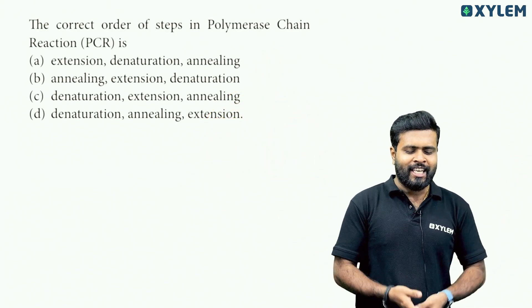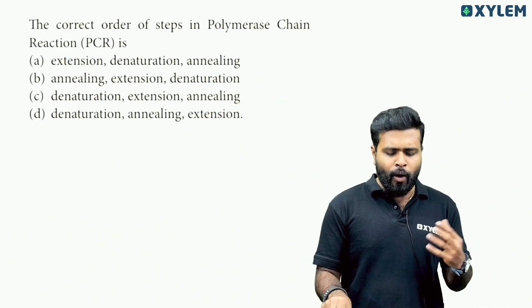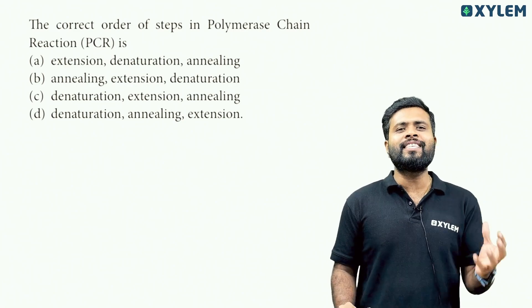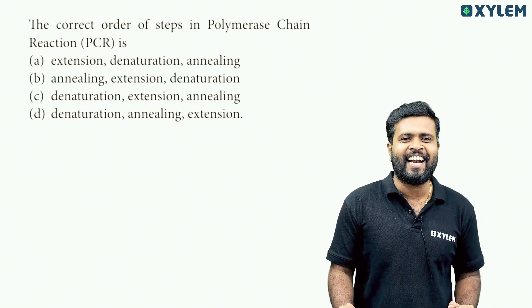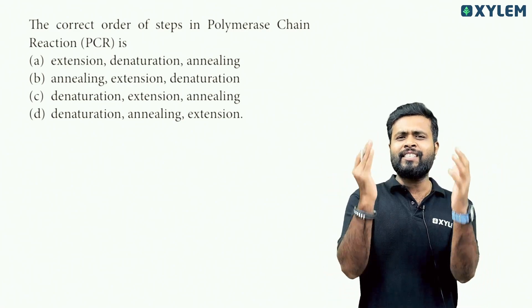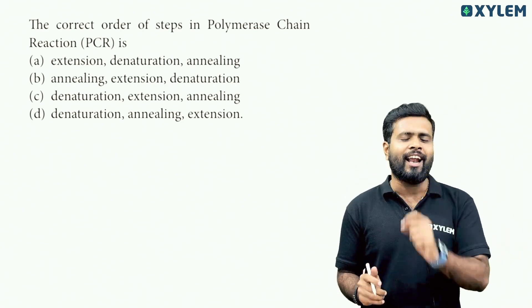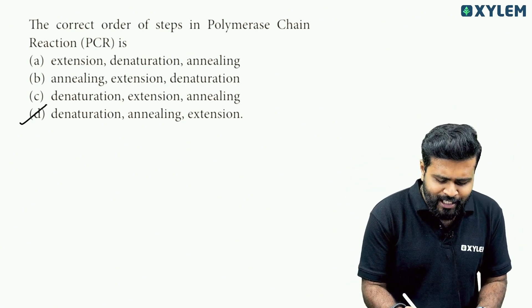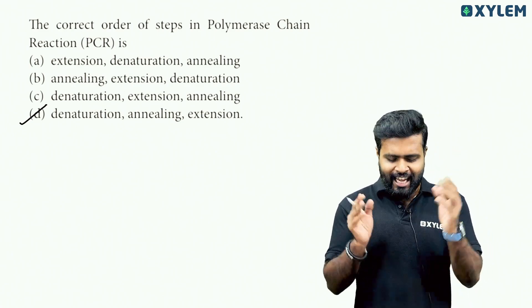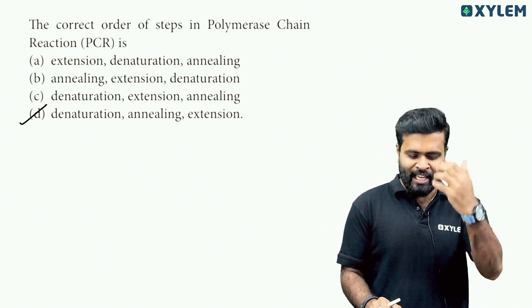So here is the first question. The correct order of steps in Polymerase Chain Reaction is: First step is denaturation, second step is annealing, and the last step is extension. So option D - denaturation, annealing, and extension is the right answer.